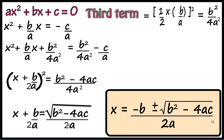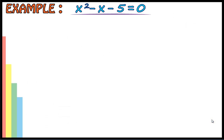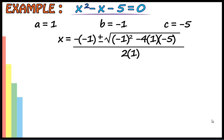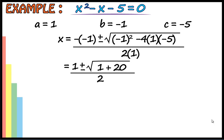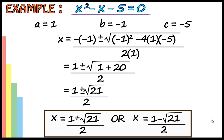You saw how easy it was. Though the formula seems difficult, if you understand it, it is very easy. Just substitute your values in the place of a, b, and c. For example: x square minus x minus 5 equals 0. Comparing with ax square plus bx plus c equals 0, we get a equals 1, b equals minus 1, and c equals minus 5. Substituting into the formula, x equals 1 plus or minus root of 21 upon 2. Therefore x equals 1 plus root of 21 upon 2, or x equals 1 minus root of 21 upon 2.